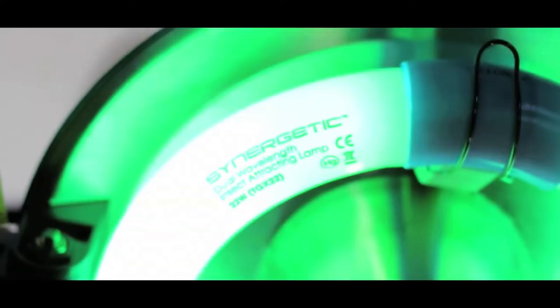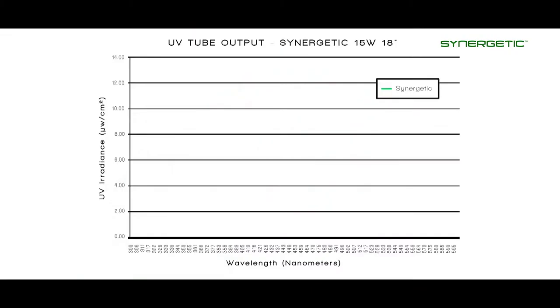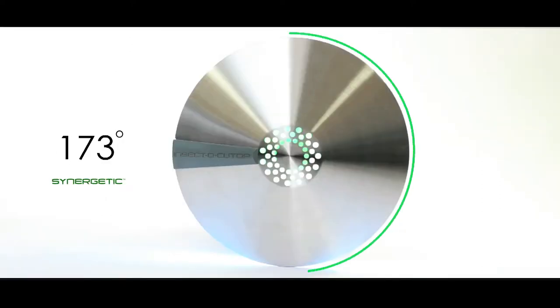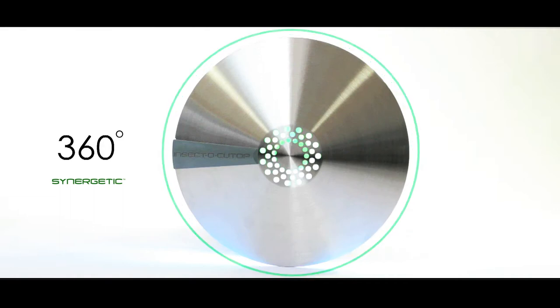The patented dual-wavelength synergetic technology in the light attracts a wider variety of flying insects for an increased catch rate. The unique circular design allows light to attract flying insects from a full 360 degrees around the unit.